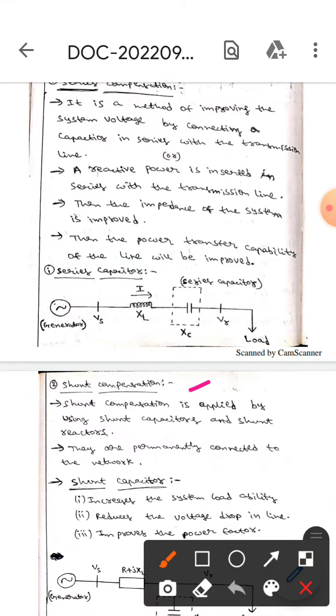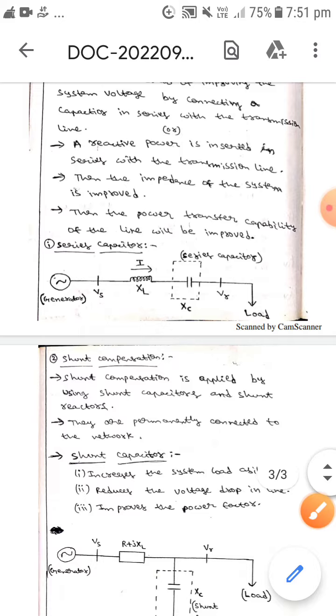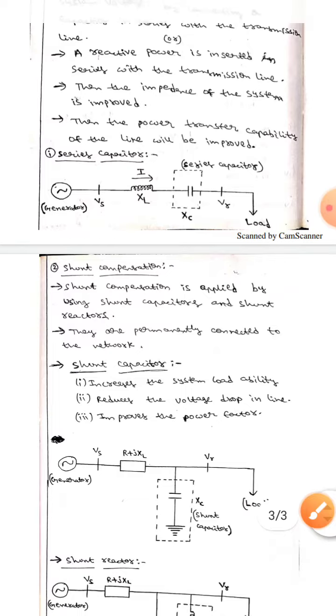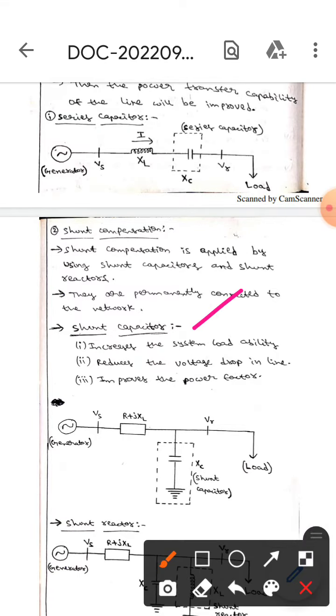The next one is shunt compensation. Shunt compensation is applied by using a shunt capacitor or shunt reactor. These are permanently connected to the network. Let's first discuss the shunt capacitor. It increases the system load ability, reduces the voltage drop in line, and improves the power factor.